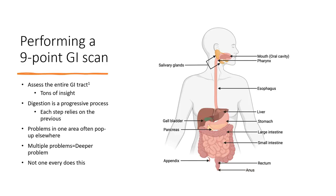Probably the most important thing you can do — that almost nobody ever does — is perform a nine-point GI scan. You're going to scan your entire gastrointestinal tract for problems you may not even know are a problem. This step is crucial to getting a good read on your GI issues or weak points, and it's essentially worthless to do an elimination diet if you have not assessed your entire GI tract first.